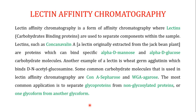Another important application of affinity chromatography is lectin affinity chromatography. This is a form of affinity chromatography where lectins are used to separate components within a sample. Lectins are carbohydrate-binding proteins — they have the ability to bind carbohydrates. One of the most common lectins used is Concanavalin A (Con A), extracted from the jack bean plant, which specifically binds to proteins carrying alpha-D-mannose or alpha-D-glucose carbohydrate molecules.